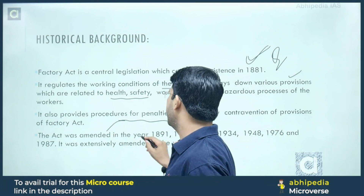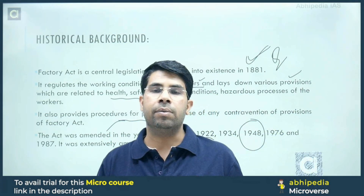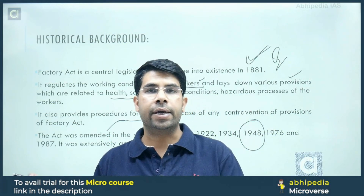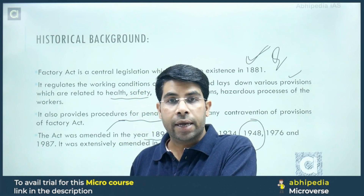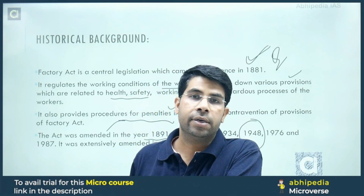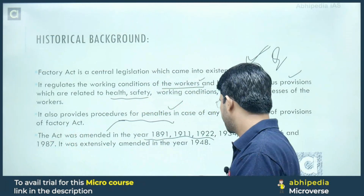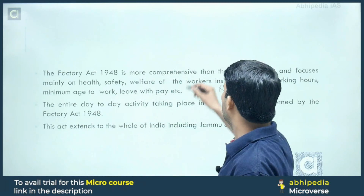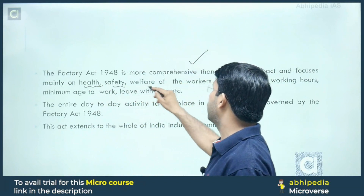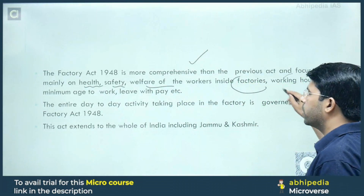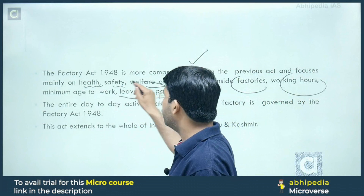The act was amended various times, and it was in 1948 when it was extensively amended. We are studying the act which was amended in 1948, now called the Factory Act 1948. It is more comprehensive, again addressing health, safety, and welfare of workers — including working hours, the minimum age for joining, and leave with pay.